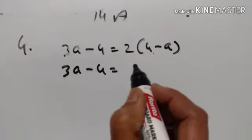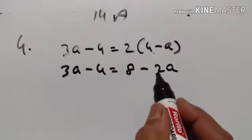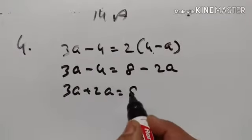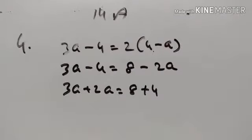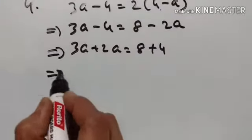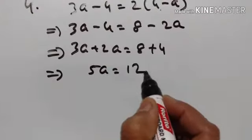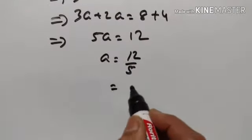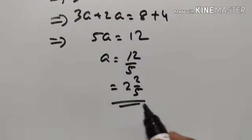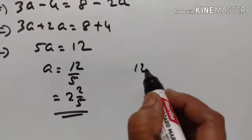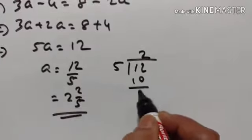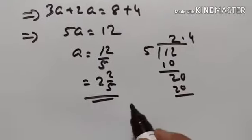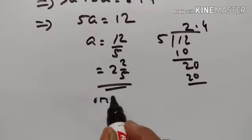3a minus 4 is equal to 8 minus 2a. Minus 2a becomes plus 2a on transposing. 3a plus 2a is equal to 8 plus 4. 5a is equal to 12, so a is equal to 12 divided by 5. 12 divided by 5 is equal to 2.4.